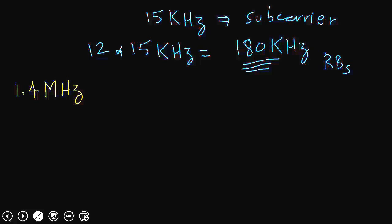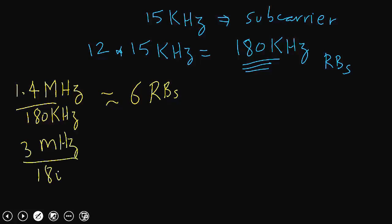I am going to divide 1.4 megahertz with 180 kilohertz, and I will get approximately 6 resource blocks. Similarly, for 3 megahertz, how many resource block chunks can I have? I will get approximately 15 resource blocks.